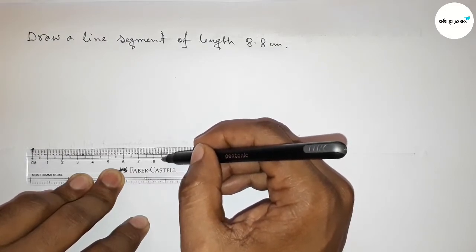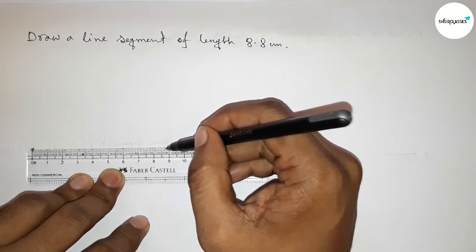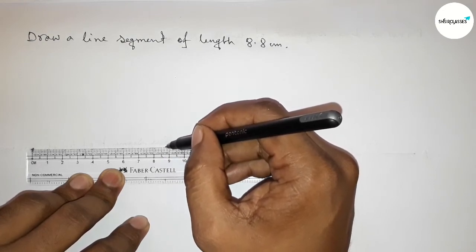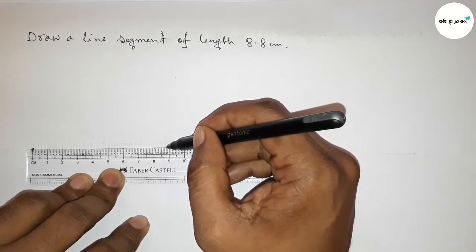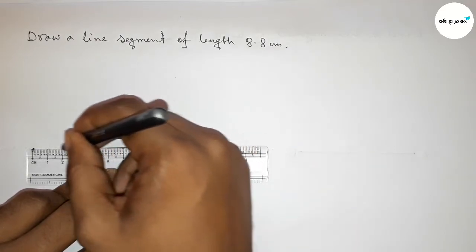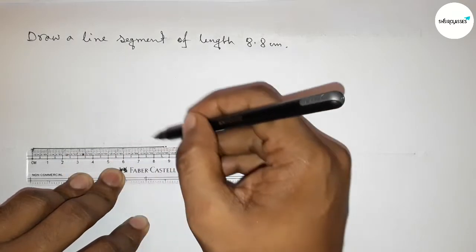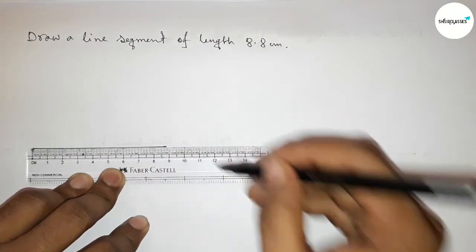This is 8.5, then 8.6, 7, 8, so this is 8.8 centimeter length. So first marking this and joining the line perfectly.